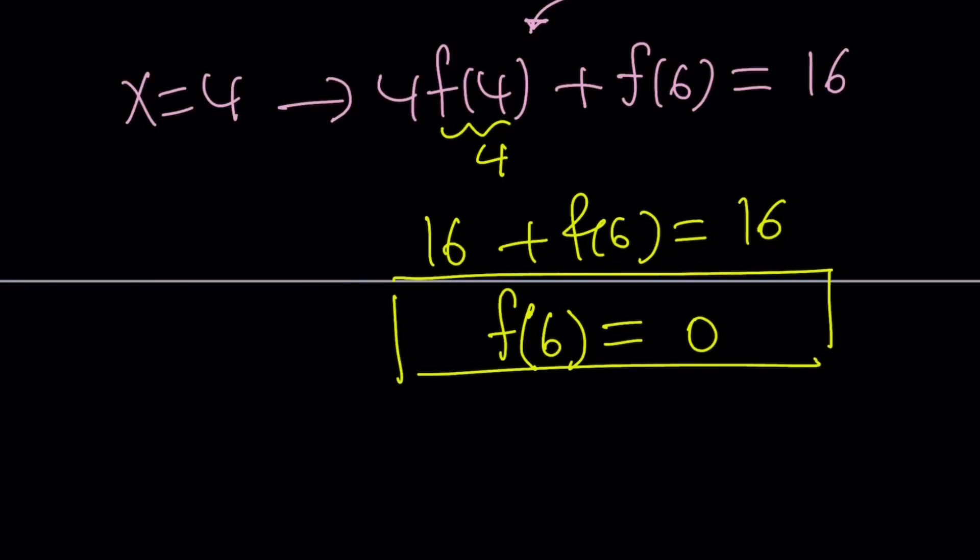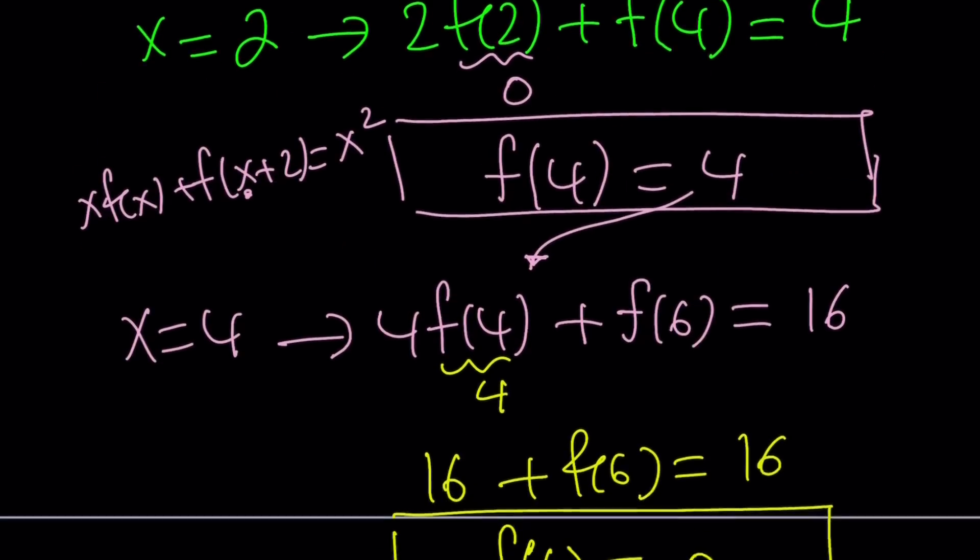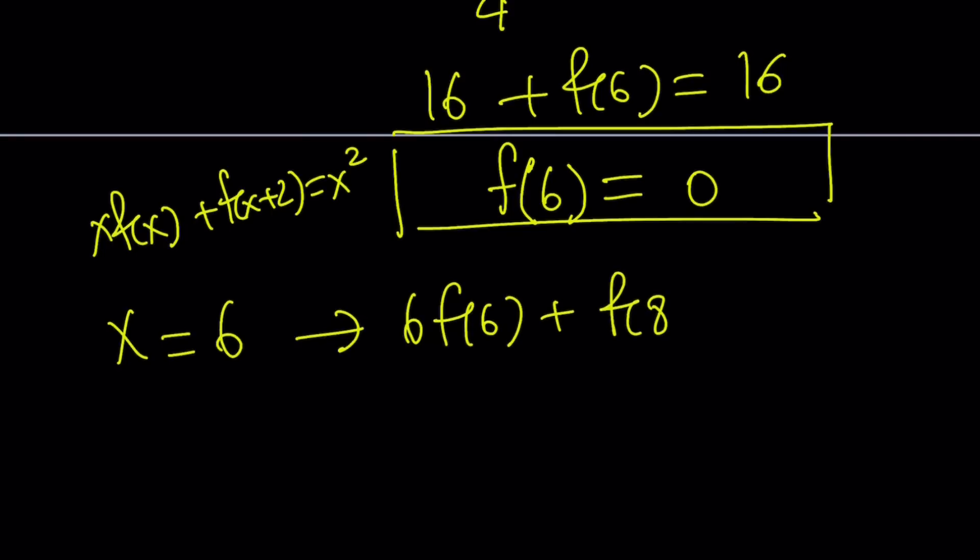Cool. Now next thing I need to do is finding f of 8. Do you think that's going to be 4 again? I get 0, 4, 0. And now, what is the next one? So let's go ahead and replace x with 6 next. Again, my equation would be xf of x plus f of x plus 2 equals x squared. I don't mind writing it over and over. Now if you replace x with 6, you're going to get 6 times f of 6 plus f of 8 equals 6 squared, which is 36.